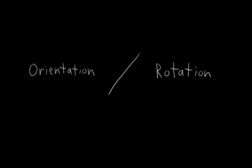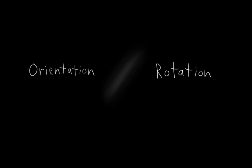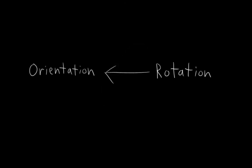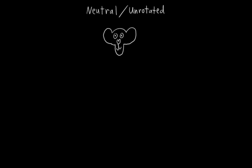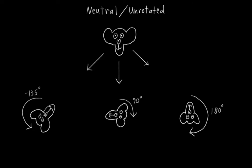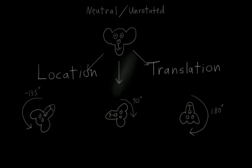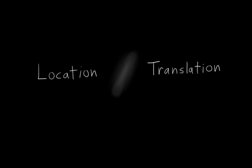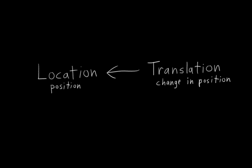In computer animation, this distinction between orientation and rotation often gets blurred. And that's because we typically use rotation to specify orientation. We have a neutral starting orientation that we consider unrotated, and then we specify other orientations by applying different rotations to it. Incidentally, it's actually the same with location and translation. Location is just a position. Translation is a change in position. But we specify locations using translations.